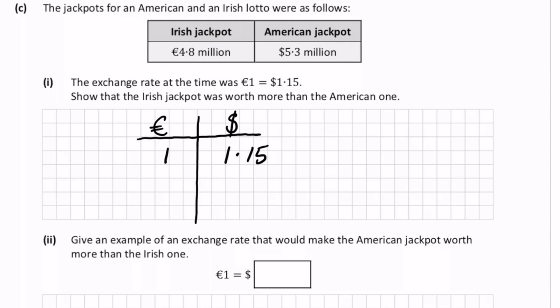So we'd like to know what 4.8 million euros is. Now the ratio of conversion is that, to get to the other side of the table, we multiply by 1.15. So if we multiply 4.8 million by 1.15, we get 5.52 million.